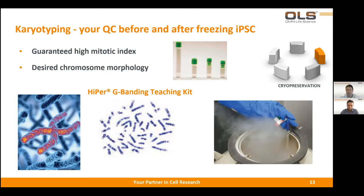It is especially important to know that you have a normal karyotype when working in vivo. For example, when you differentiate your iPSCs into a precursor cell line and these precursor cells are meant for injection into humans, you do not want to trigger tumor growth. That's why you must be sure that you work with a normal karyotype.